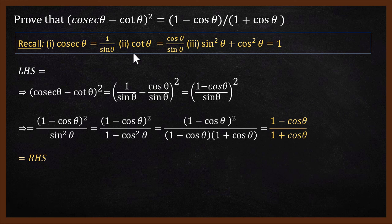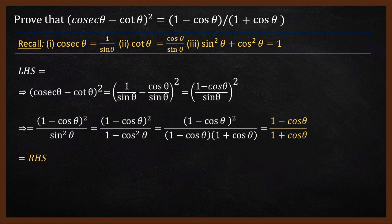We used the definitions of cosecant theta and cot theta, and we used the sin squared plus cos squared theta equals 1 identity. By substituting and simplifying, the left-hand side equals the right-hand side, and it is proved. Hopefully you have understood how to solve this problem. In future videos, we will solve other trigonometric problems.